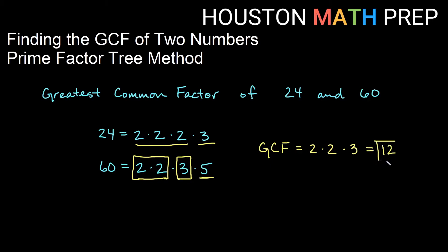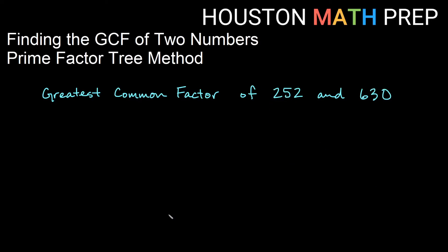Some of you might be able to look at 24 and 60 and already see what goes into them. You might see all the factors and even be able to see that 12 is the greatest common factor, and that's great. What we want to be able to do is use this type of method when the numbers don't have much in common, or they're much larger than we're used to dealing with and we're trying to figure out what the GCF might be. Let's look at another example.